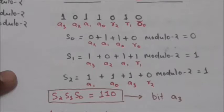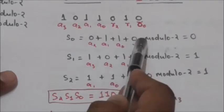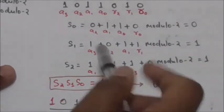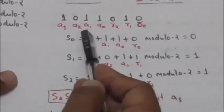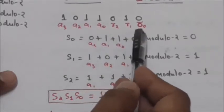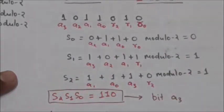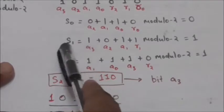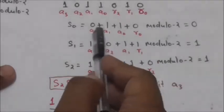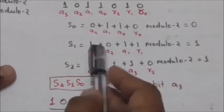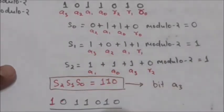For s0, the equation is (a2 + a1 + a0 + r0) modulo 2. With a2=0, a1=1, a0=1, r0=0, the bits are 0,1,1,0 which has an even number of ones, so s0 will be 0. For s1, the equation is (a3 + a2 + a1 + r1) modulo 2. With a3=1, a2=0, a1=1, r1=1, the bits 1,0,1,1 have an odd number of ones, so s1 will be 1.